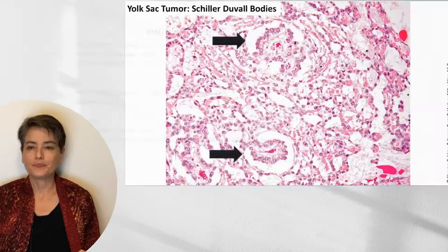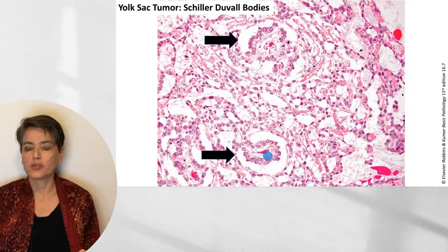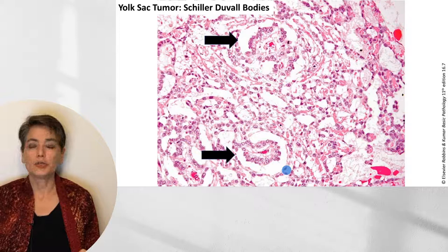A Schiller-Duvall body is a glomeruloid structure in a cystic space with a central blood vessel. A typical board question vignette would show this appearance along with a history of elevated AFP in a child under four — that should help you make the diagnosis of yolk sac tumor.